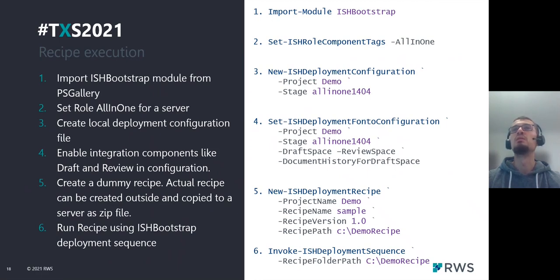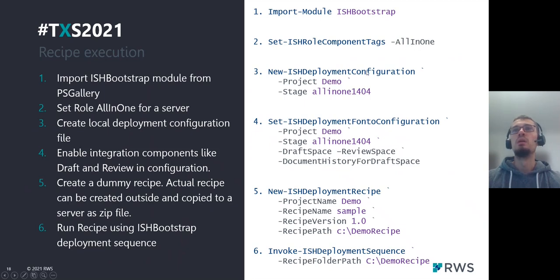To execute the recipe, I'm showing a simple basic script — I'll also show it in the demo. First we start by importing the ISHBootstrap module. Then, using the Set-ISHRoleComponentTags commandlet, we set a role for the local system — in our case, all-in-one. Then we run New-ISHDeploymentConfiguration. The project and stage parameters basically define a path in the configuration file to your configuration.